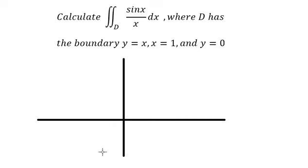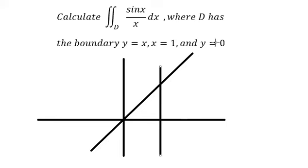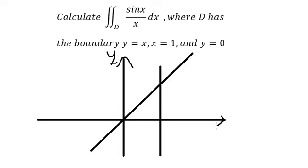y equals s, s equals one, and y equals zero. So this is about y, this is about s, and this is about zero. The area we need to concentrate on is the green one shown here.